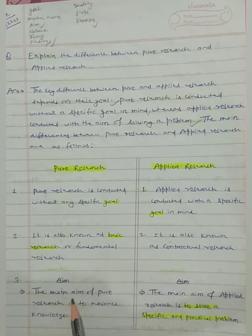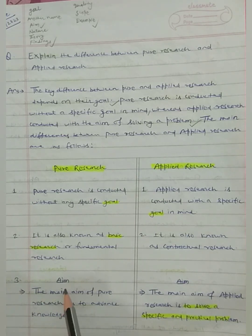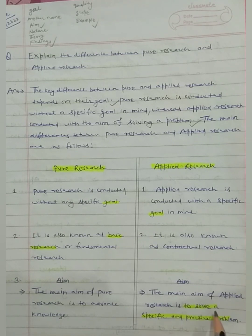Number three: aim. The main aim of pure research is to advance knowledge. The main aim of applied research is to solve a specific and practical problem.